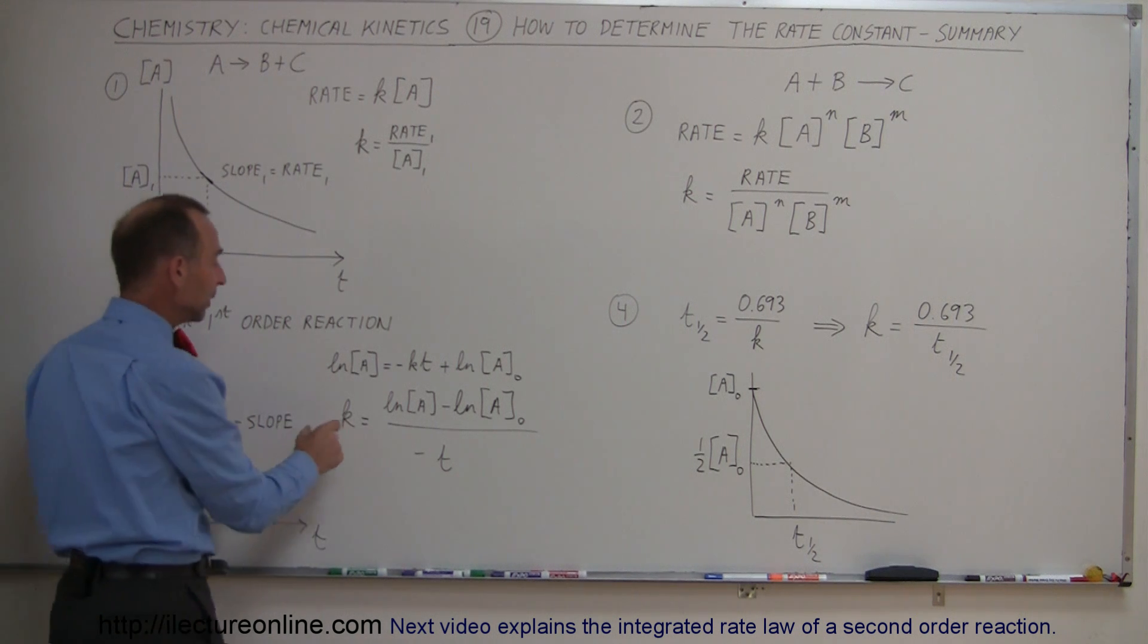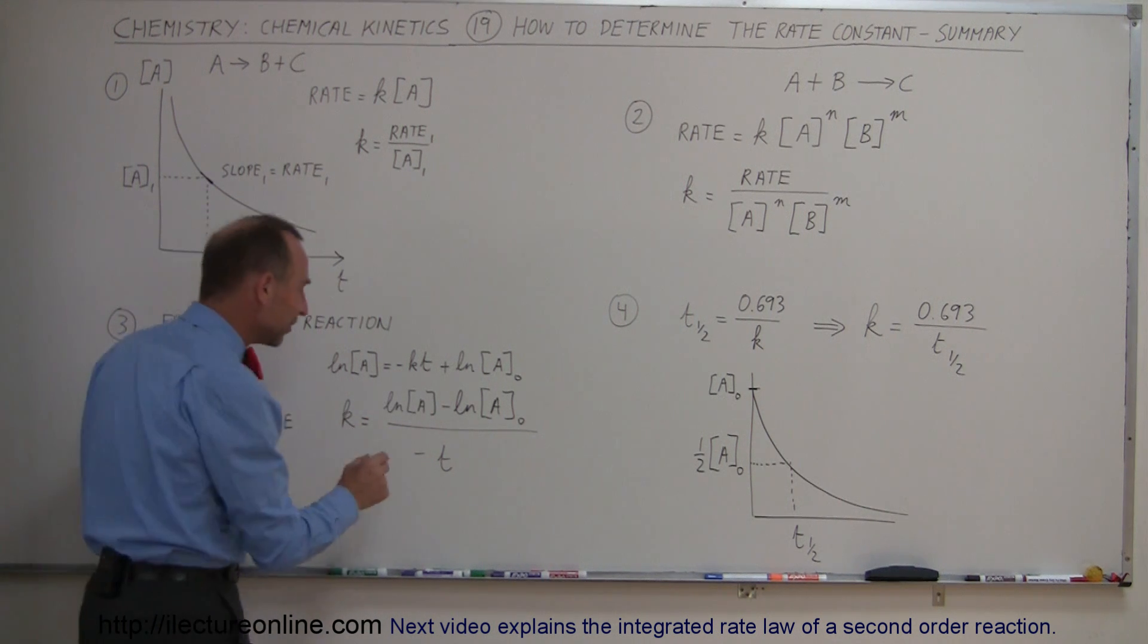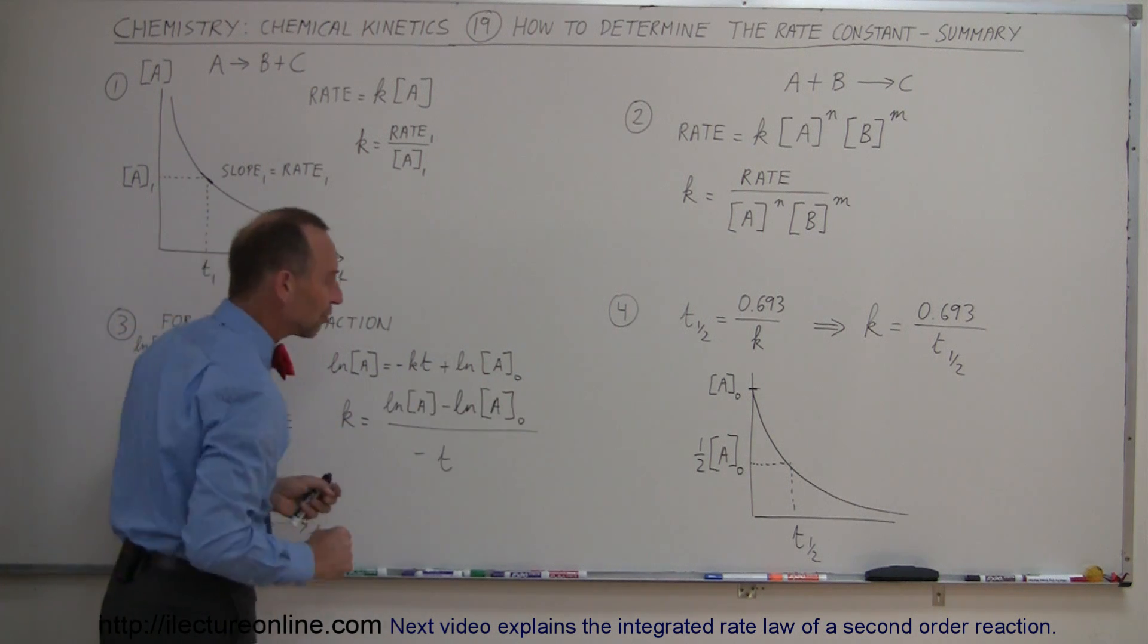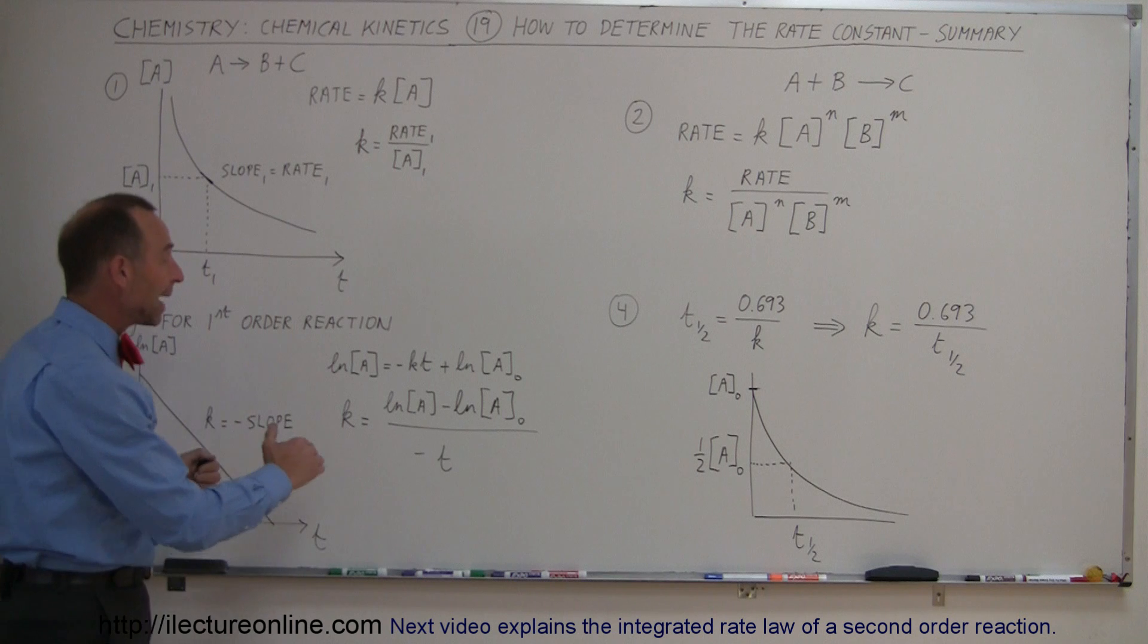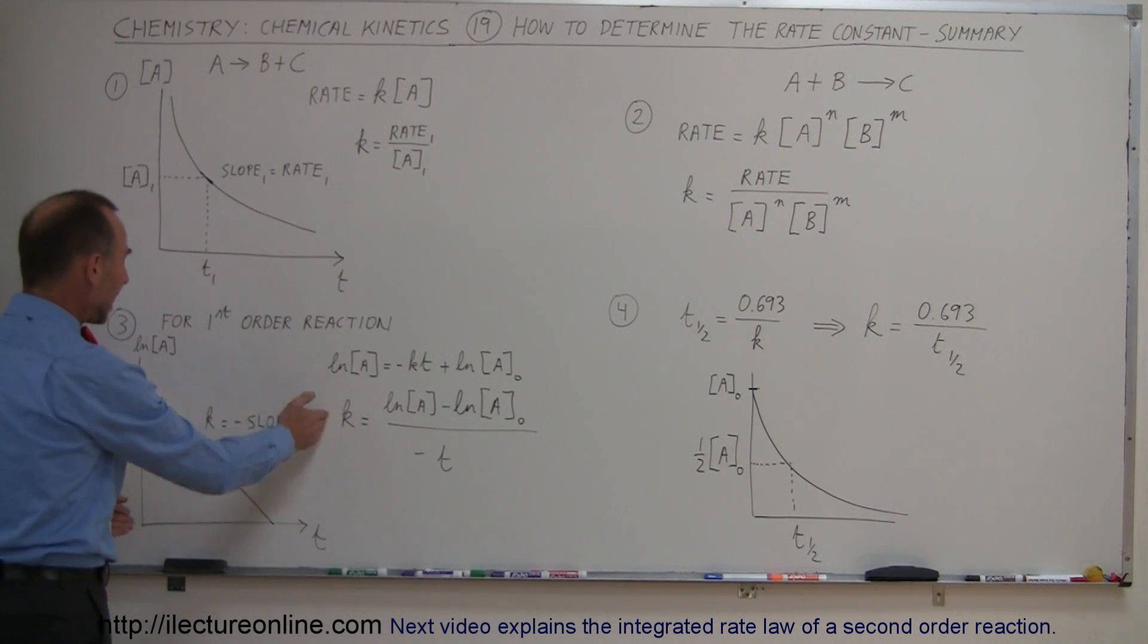we can see that we simply take the difference between how much of the reactant we have at this moment in the reaction, take the natural log of that, minus the natural log of the concentration initially, when the reaction first started, divided by the negative of the time that's elapsed so far, and that gives us K.